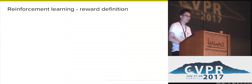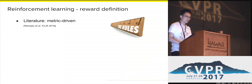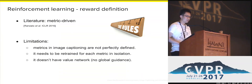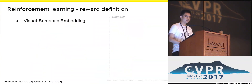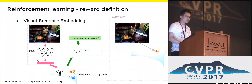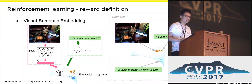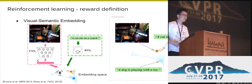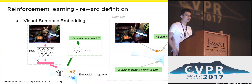In reinforcement learning, the key is to define the reward. In the literature, there is one paper that applies metric-driven reinforcement learning to image captioning. However, it has limitations: metrics in image captioning are not perfectly defined yet, and it needs to be retrained for each metric in isolation. Besides, it doesn't have a value network to provide global guidance. So, in this paper, instead, we propose to define reward based on visual semantic embedding. It maps both images and texts into a joint embedding space where semantically related images and texts tend to be close, while unrelated ones tend to be distant. We use cosine similarity in this embedding space to define the reward.